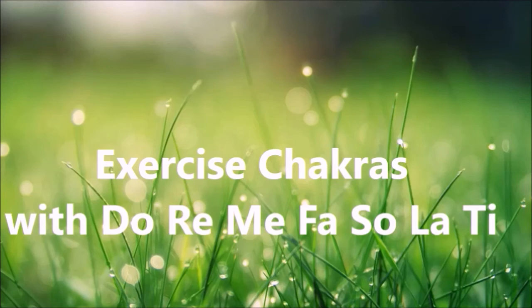Take a deep breath and say the whole sequence: do, re, mi, fa, sol, la, ti. Then take a deep breath again and continue the process. You can do it five times, ten times, whatever you wish. As you go through each syllable, you have to visualize the color associated with each chakra — I have mentioned the colors on screen.